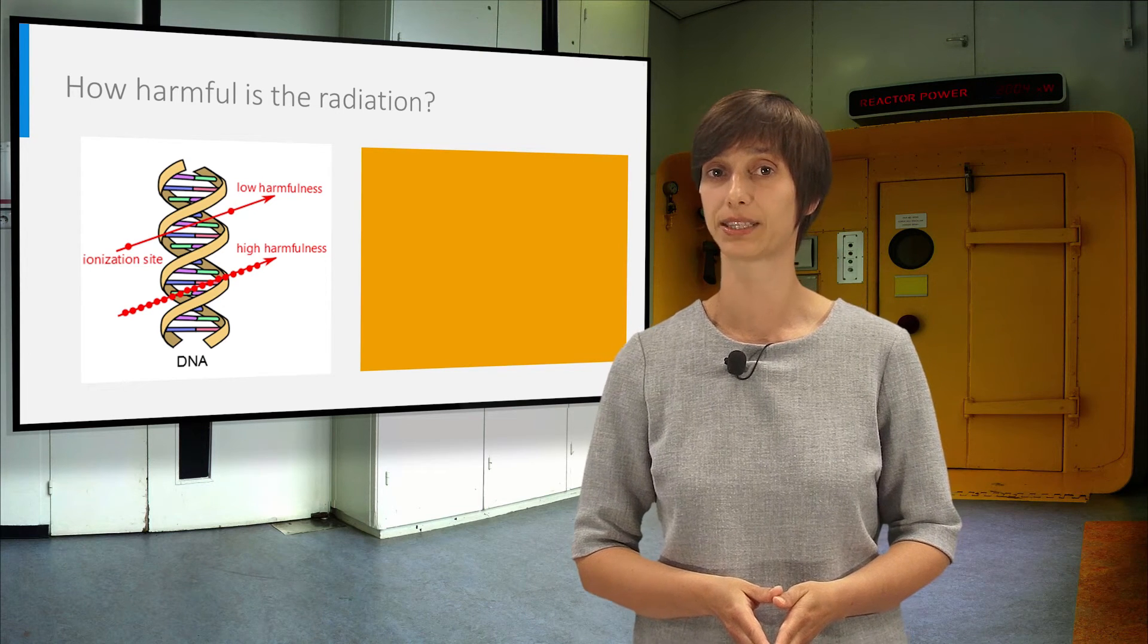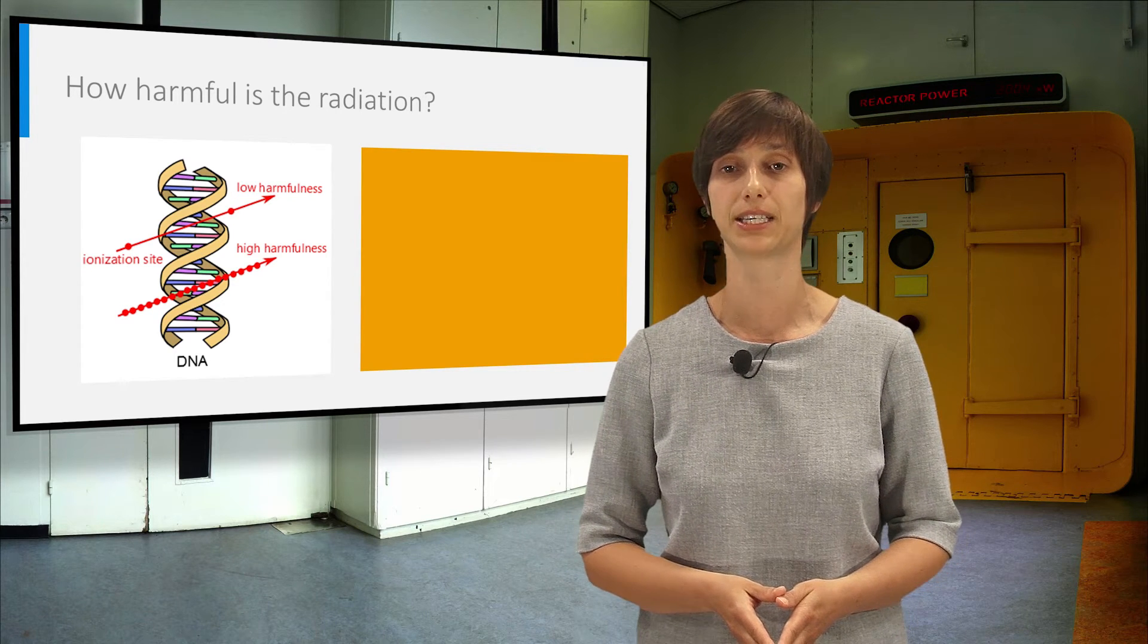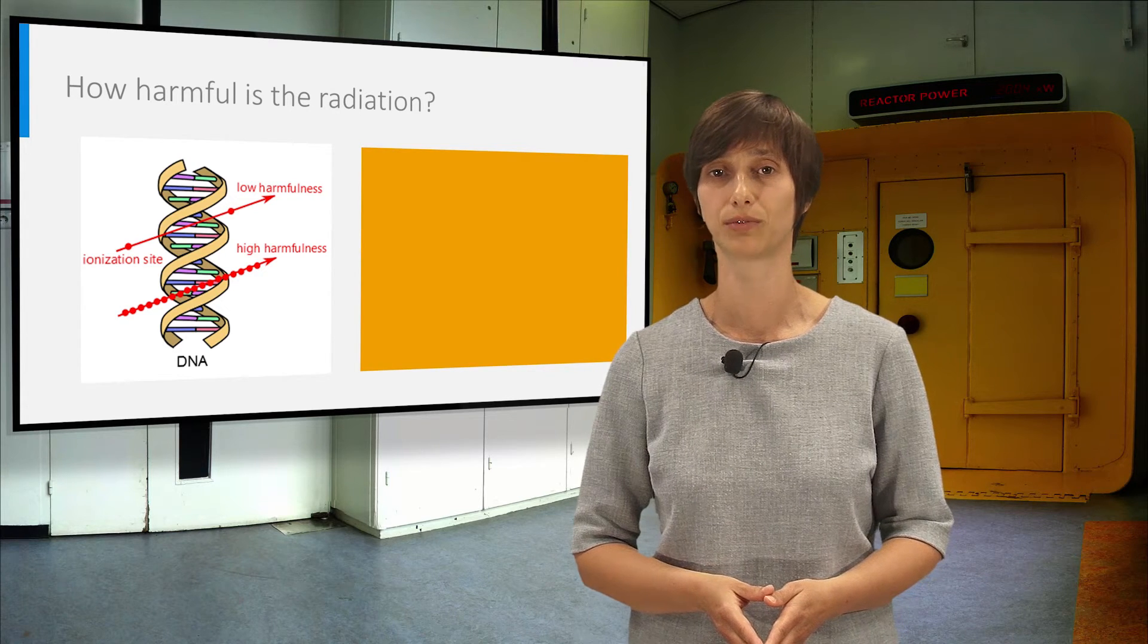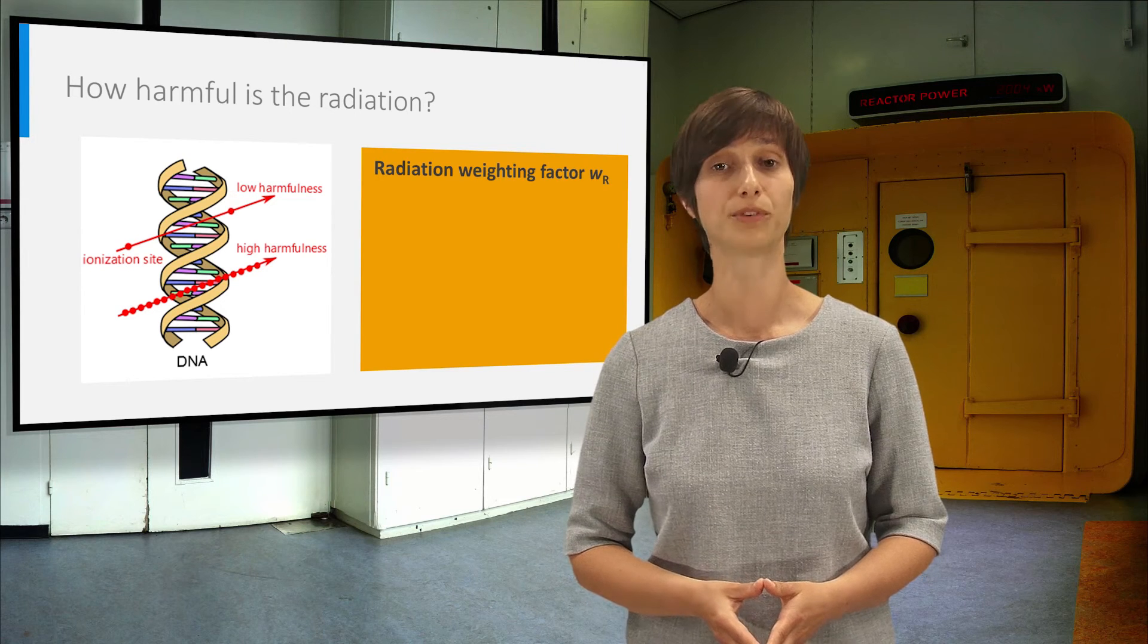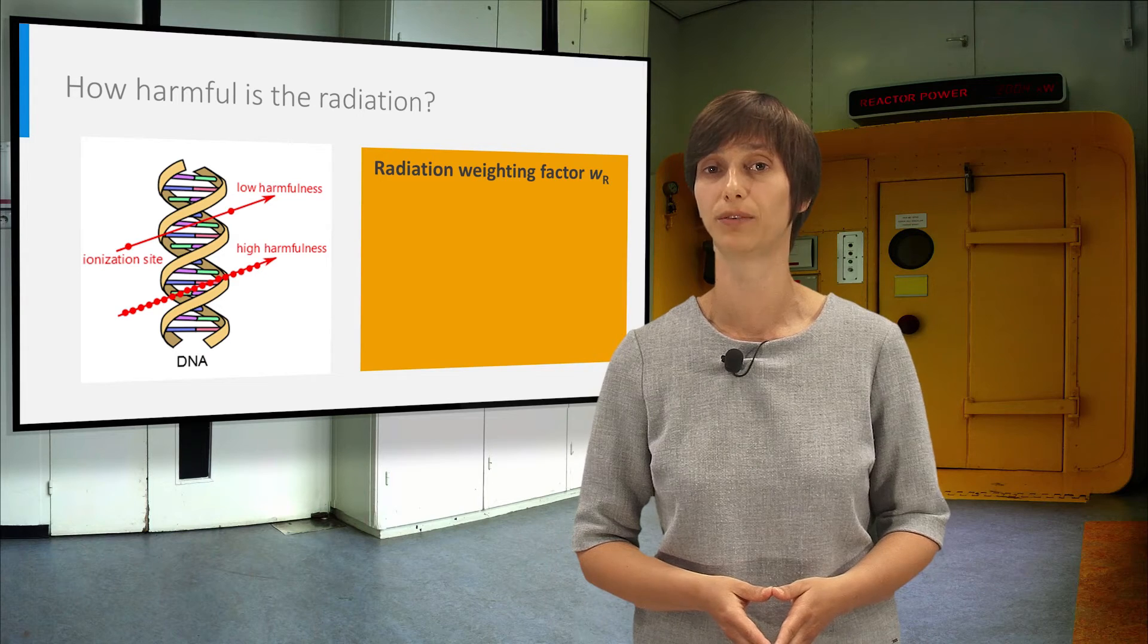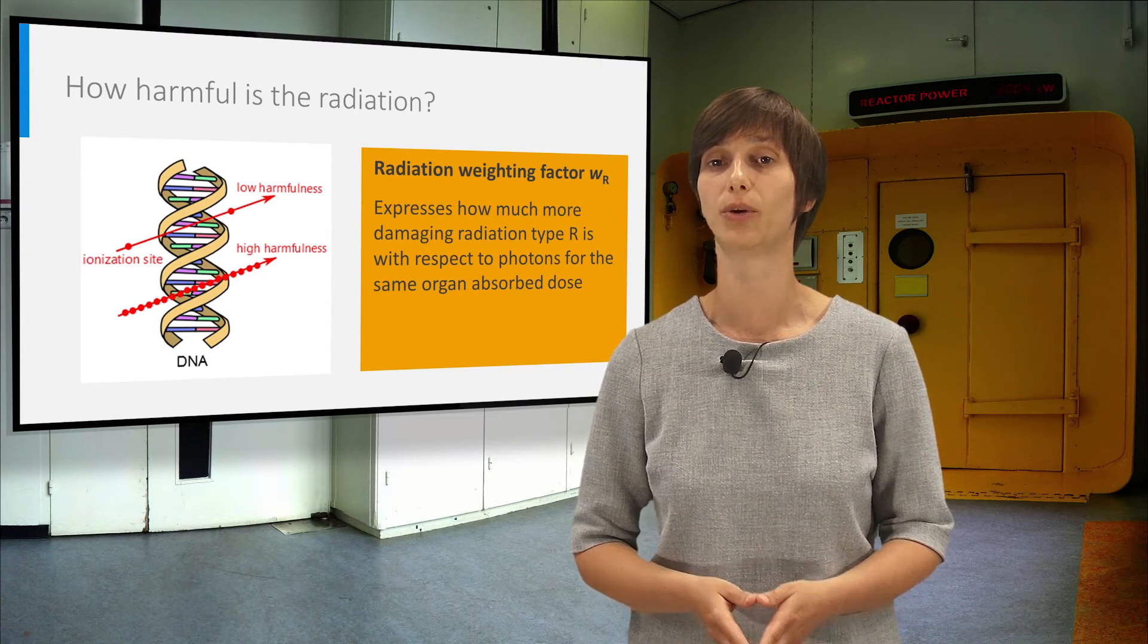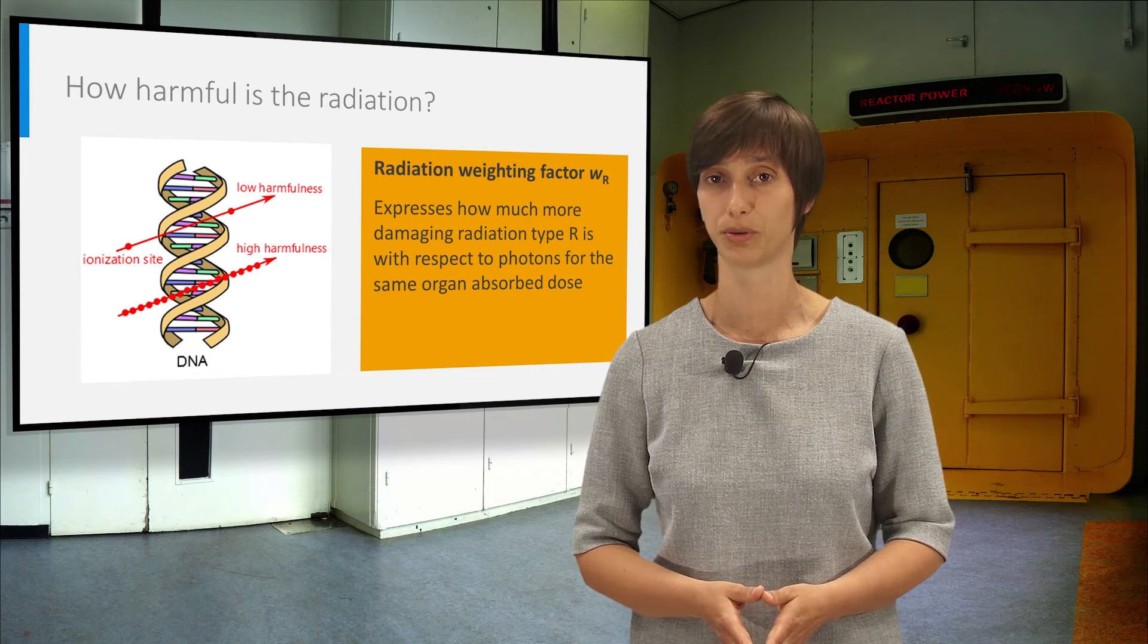On the other hand, radiation types, such as alphas and heavier nuclei, have a much larger ionization density. This gives rise to very complex DNA damage that is much more difficult for the body to repair, and thus more harmful. The harmfulness of each radiation type R is taken into account by the radiation weighing factor.